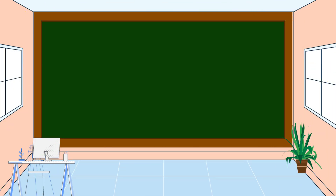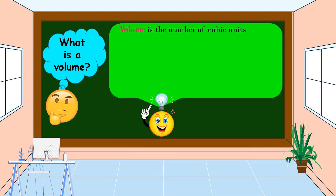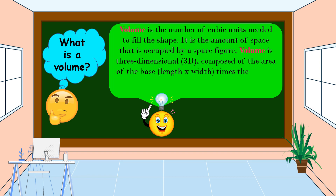Before we discuss how to find the volume of a rectangular prism, let's define first what volume is. Volume is the number of cubic units needed to fill a shape. It is the amount of space occupied by a space figure. Volume is three-dimensional, composed of the area of the base — which is length times width — times the height. That is why it is always in cubic units, such as cubic centimeters, cubic meters, and so on.